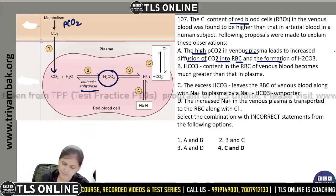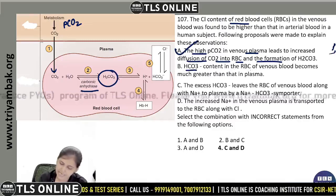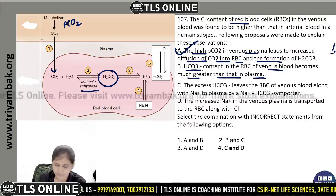Second proposal: the bicarbonate content in the RBC of venous blood becomes much greater than that in plasma. Yes, the bicarbonate content in RBC will increase. This is correct.